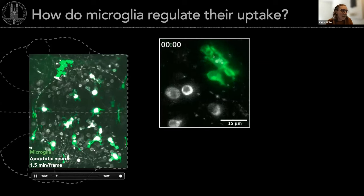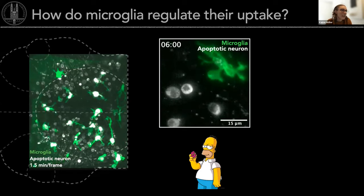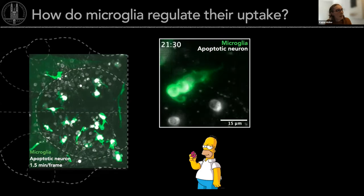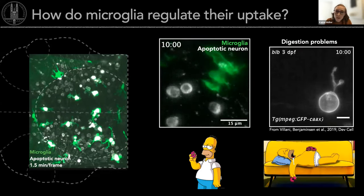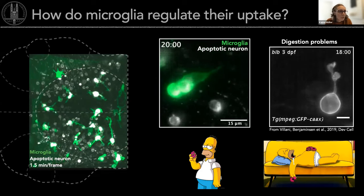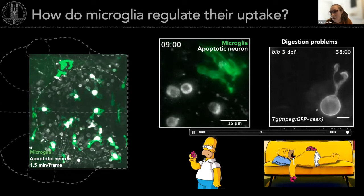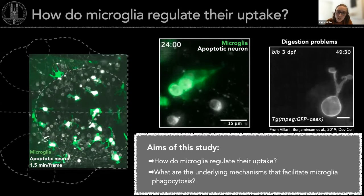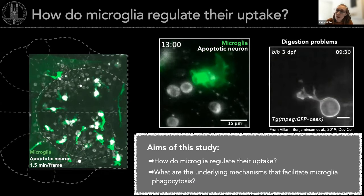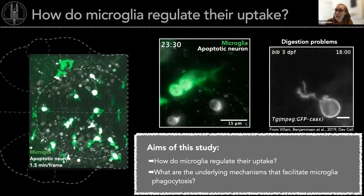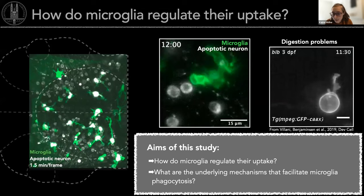Here you can see a close-up: green microglia and gray dead neurons, showing how microglia normally phagocytose dead neurons — collecting them one by one. However, when something goes wrong in the microglia, for example in this mutant that has problems digesting the neurons, they become massive and can't really phagocytose or move around. My research question was to figure out how microglia regulate their uptake and what the underlying mechanisms facilitate the phagocytic process, using mainly microscopy techniques.